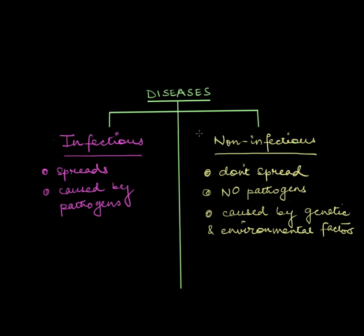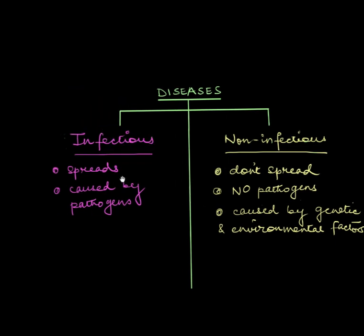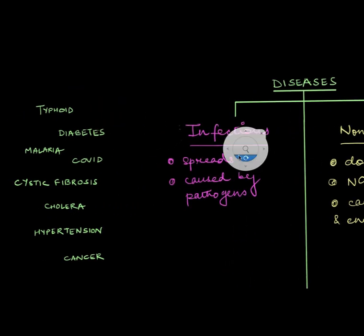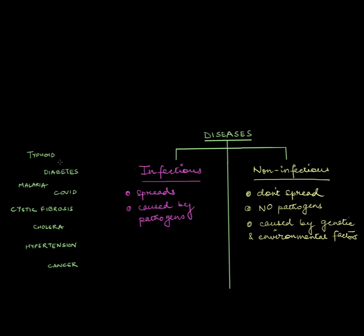So now you have a fair idea about infectious and non-infectious diseases. Let's go back to that disease list and sort the diseases into the right category. We'll colour the words in pink for infectious diseases and yellow for non-infectious diseases. Let's go.